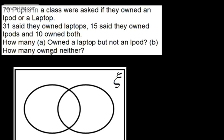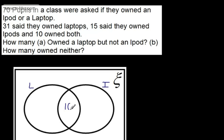What we're going to do is draw a Venn diagram where the rectangle represents the universal set — all members of the class, 70 pupils. One circle will be laptop and one will be iPod. The easiest place to start is the intersection — the place where they owned both a laptop and an iPod. We know 10 owned both, so 10 goes in the middle.